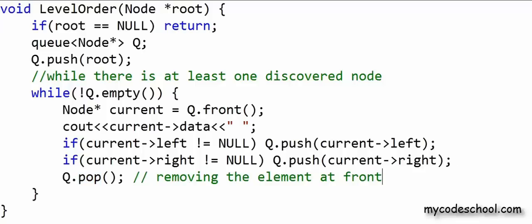So this is the implementation of level order traversal in C++. You can check the description of this video for a link to the source code, where you can also find all the extra code to test this function. Let's now talk about the time and space complexity of level order traversal.